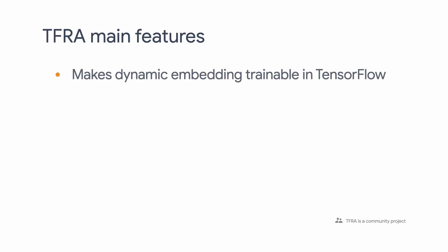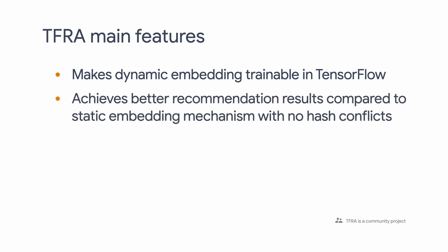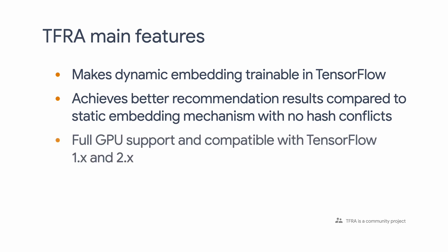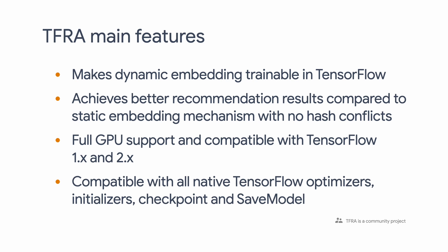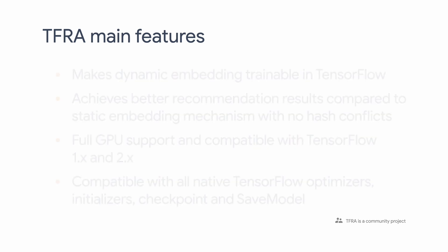One of the biggest benefits of TFRA is dynamic embedding. If you recall from our last video, we mentioned using the hashing trick to accommodate new user IDs or item IDs in your model. That's one way to do it, but TFRA gives you another way to handle this. TFRA allows you to dynamically increase or decrease the embedding table size, which often achieves better recommendation results than static embedding in native TensorFlow. This is particularly useful for the online learning scenario, in which data arrives in a sequential manner and is used to update the model continuously instead of in a batched mode.